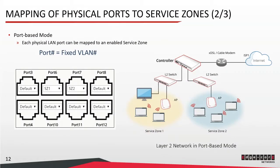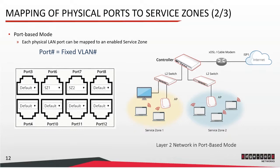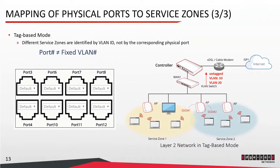As shown on this slide, when you choose port-based mode you can map each LAN port to a service zone — for example, all LAN ports except ports 6 and 7 map to the default service zone. In tag-based mode, the controller uses the VLAN tag of incoming traffic to determine which service zone traffic should be redirected to. If the incoming traffic has no VLAN tag, it goes to the default service zone.